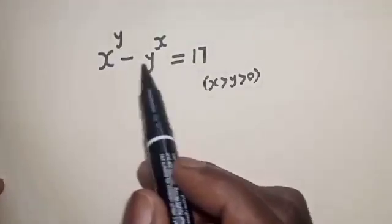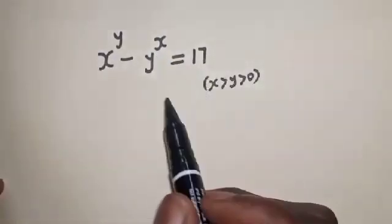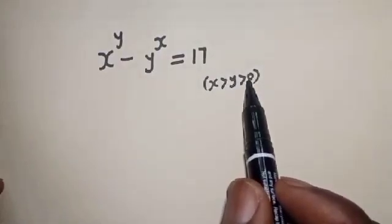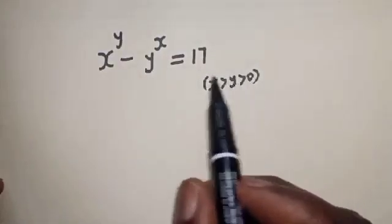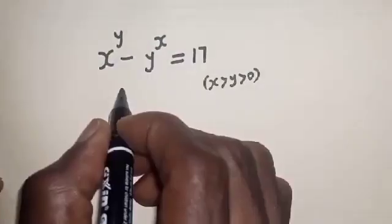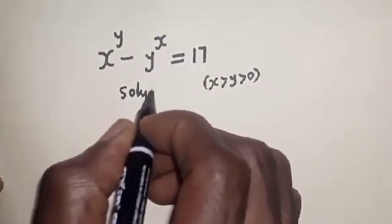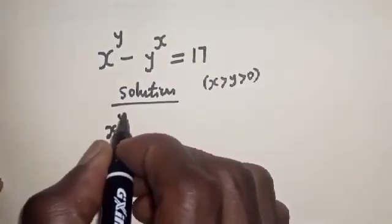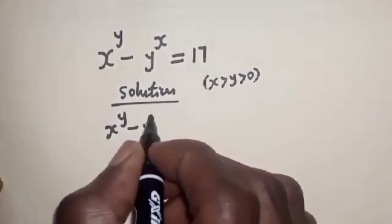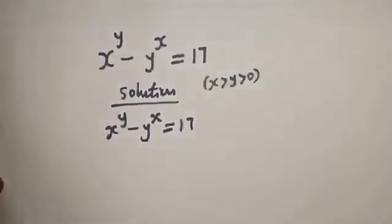S raised to power Y minus Y raised to power S is equal to 17, where S is greater than Y and greater than zero. What is the value of S and Y? Solution: S raised to power Y minus Y raised to power S is equal to 17.